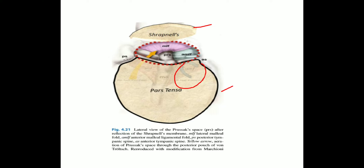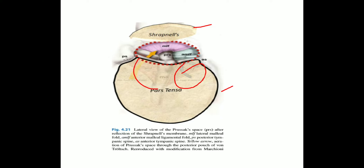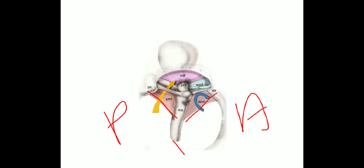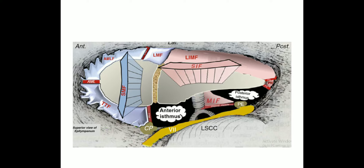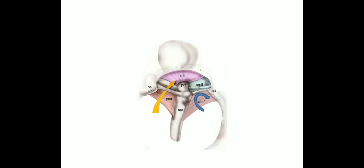Between the pars tensa and the anterior tympanomalleal fold there is a potential space called the anterior pouch of von Tröltsch. Similarly, between the pars tensa and the posterior tympanomalleal fold there is a potential space called the posterior pouch of von Tröltsch. Although these two pouches appear similar, there is a key difference: the anterior pouch of von Tröltsch is a blind-ending pouch with no communication, whereas the posterior pouch of von Tröltsch communicates superiorly with another space.